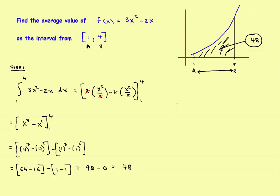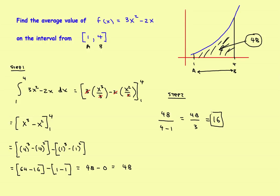Now step two: divide by the width of the interval. Take 48 and divide it by b minus a, which is 4 minus 1. That gives 48 divided by 3, which equals 16. That's the actual answer — the average value of the function on the interval.